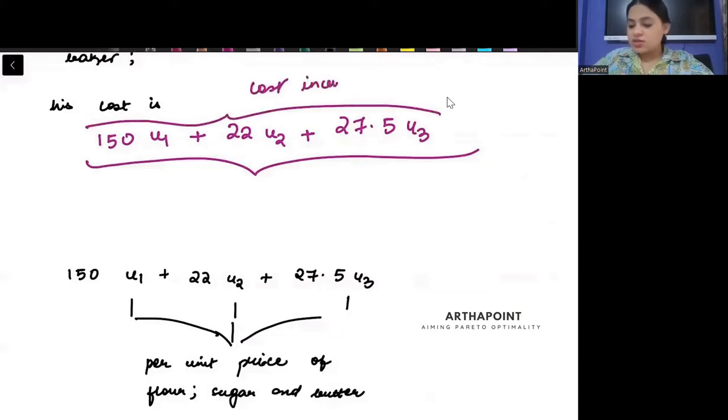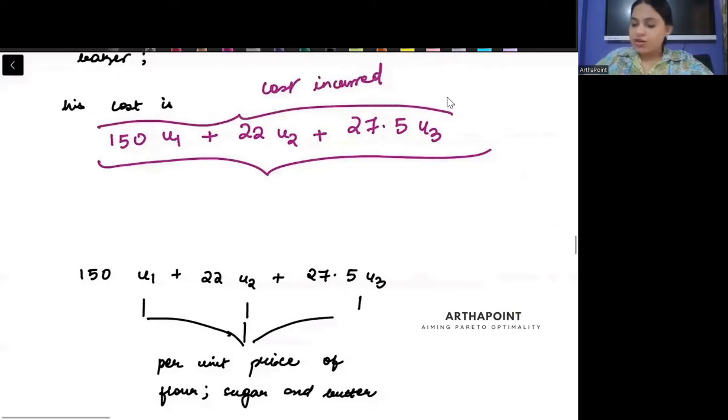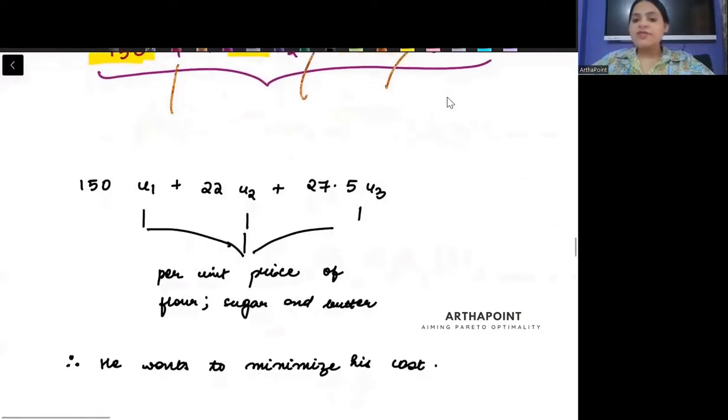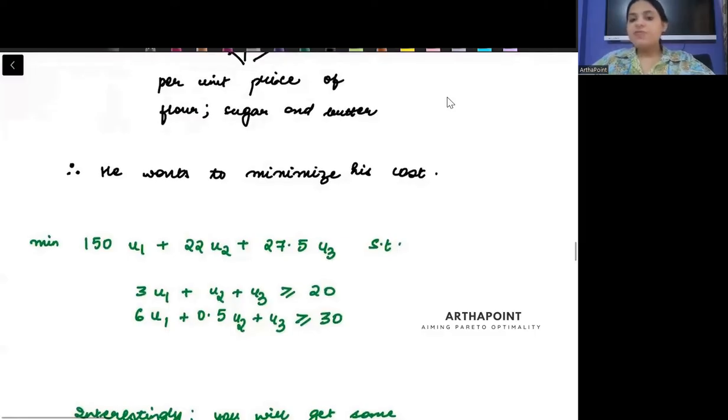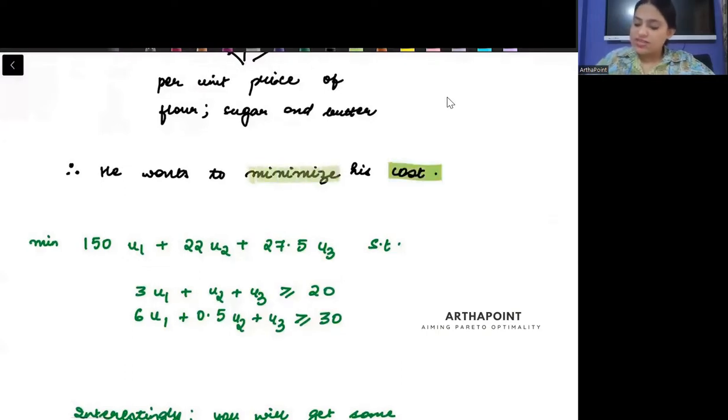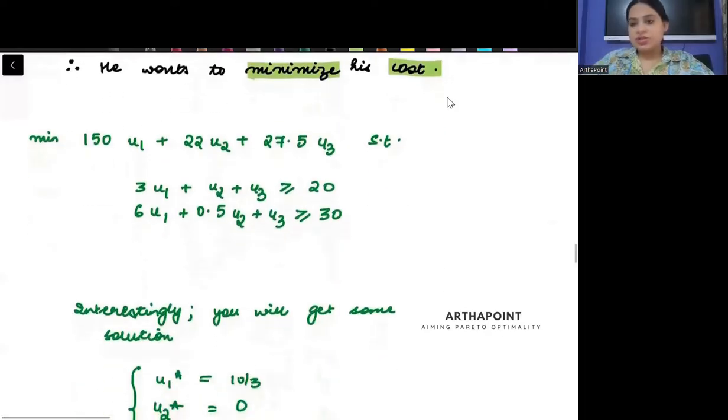This is the cost incurred. I have gone ahead and purchased 150 kgs of flour, 22 kgs of sugar, and 27.5 kgs of butter, each at price U1, U2, and U3 respectively. So this is the cost that I have incurred when I would have purchased them. I want to minimize that cost.